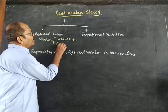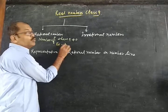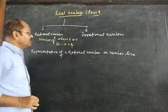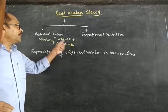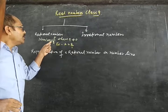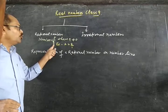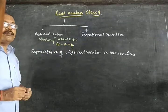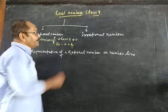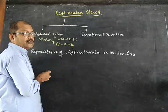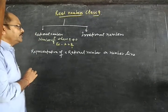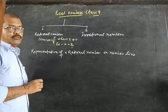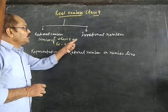For example, suppose 2. It can be written as 2/1, where the numerator is 2 and the denominator is 1. The denominator should not be zero — in that case the number is called a rational number. If q equals zero, the result will be infinite, which is neither rational nor irrational. So q does not equal zero.